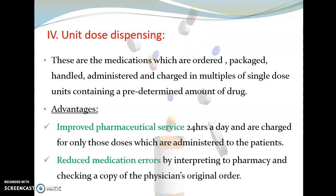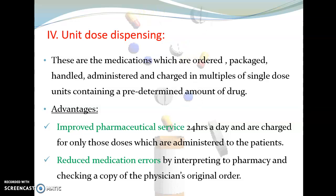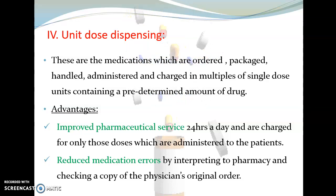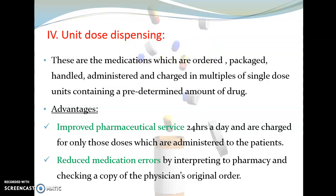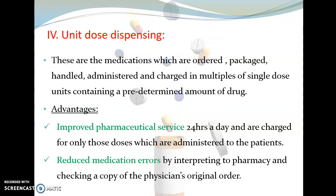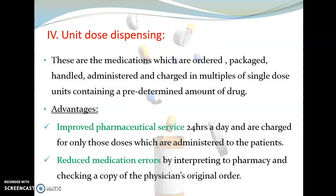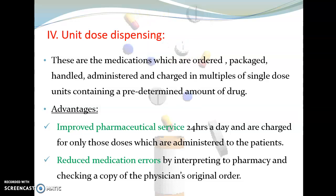The fourth type of drug distribution system is unit dose dispensing. Here, medications are ordered, packed, handled, administered, and charged in multiples of single dose units containing a predetermined amount of drug. The main advantage is improved pharmaceutical services available 24 hours a day, and patients are charged only for those doses which are actually administered to them.